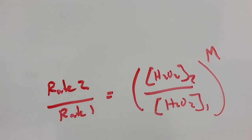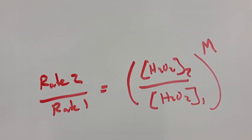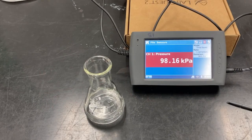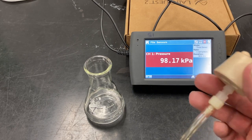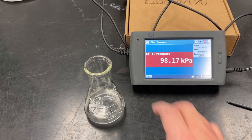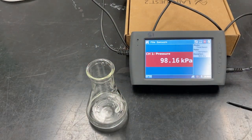Once we find this order, we can go and write the actual rate law for the reaction. So we've got the pressure sensor connected to the LabQuest. I've got my rubber stopper fitting on the hose, and I've got my flask at room temperature — it's about 24 degrees right now.